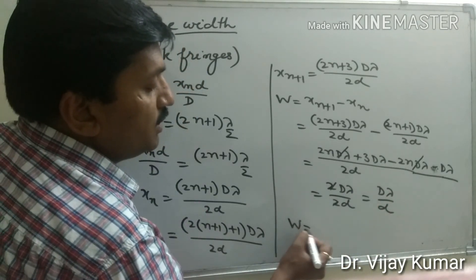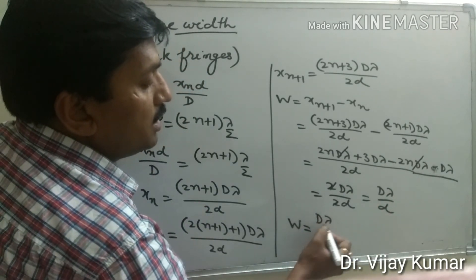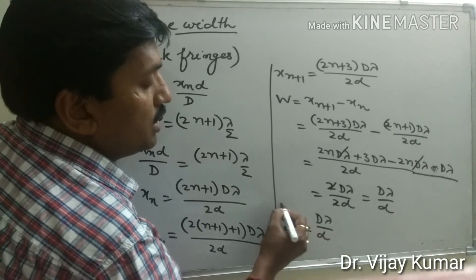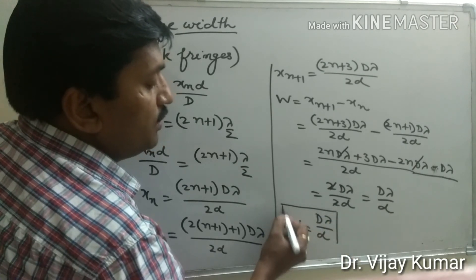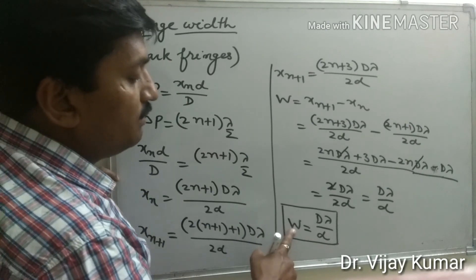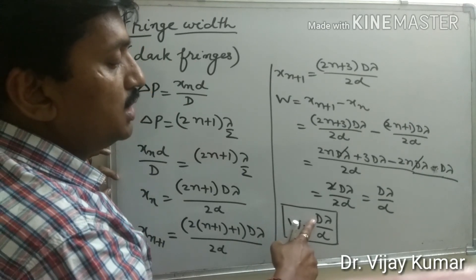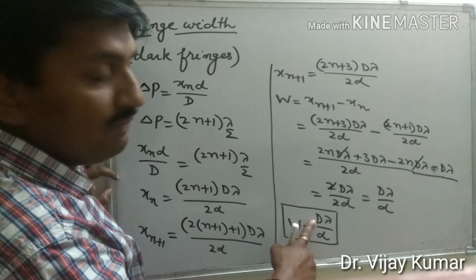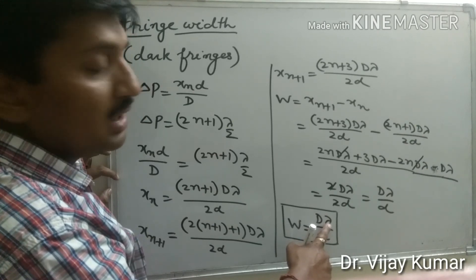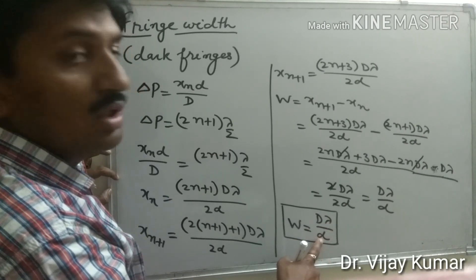Therefore, the fringe width for dark fringes is W = Dλ/d. This fringe width depends on the separation between source and screen (D), the wavelength of monochromatic light (λ), and the separation between coherent sources (d).